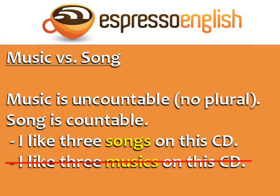Music is uncountable, so there's no plural. Song is countable. You can say, I like three songs on this CD, but it's incorrect to say I like three musics on this CD, because music cannot be plural.